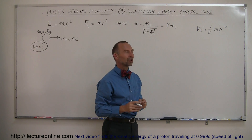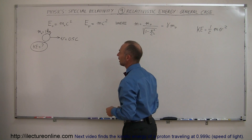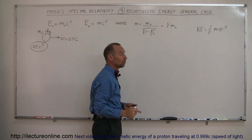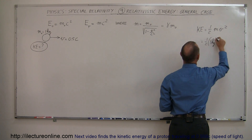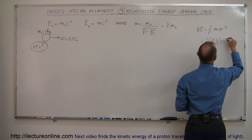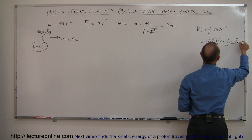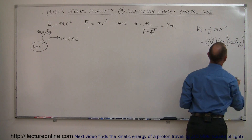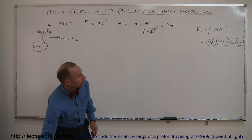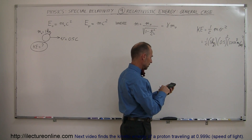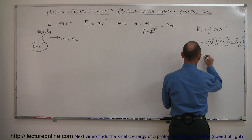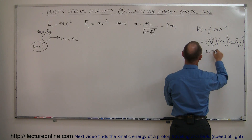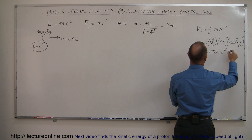Let's do it the old-fashioned, non-relativistic way and see what number we would get for an object that has a mass of one kilogram moving at 0.5c. Plugging that into our old equation, this is equal to one-half times one kilogram times 0.5 times 3×10⁸ meters per second, squared — that's half the speed of light. Using the calculator, the kinetic energy equals 1.125×10¹⁶ joules.